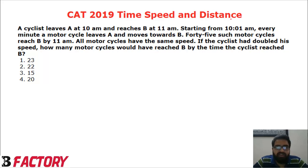The question is: a cyclist leaves A at 10 am and reaches B at 11 am. From 10:01 onwards, every minute a motorcycle starts from A and moves towards B. Now, by the time the cyclist reached B, which is 11 am, he crossed 45 bikes.